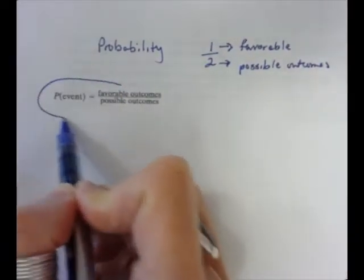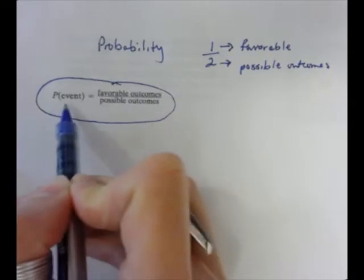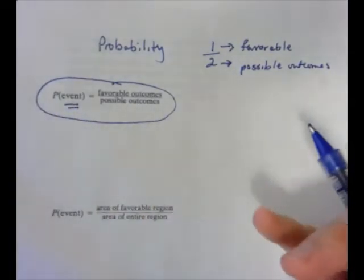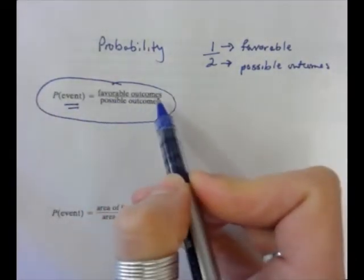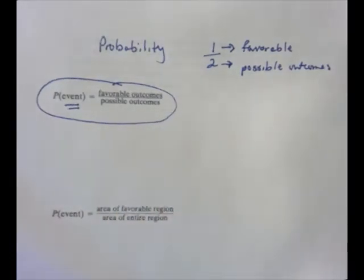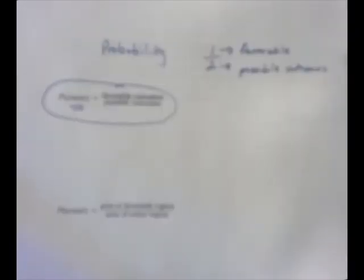So again, the probability of an event happening, any event at all, even if it doesn't have to do with coins, is the favorable outcomes over the possible outcomes.